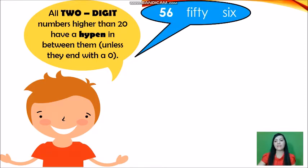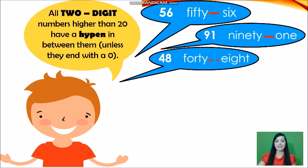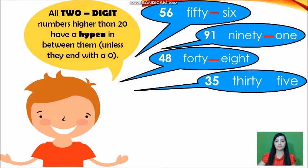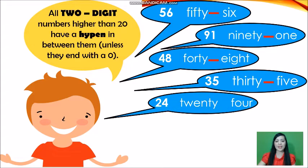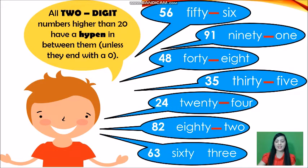Example: 56 — put a dash or hyphen in between 50 and 6. Number 1: 91, 48, 35, 24, 82, and 63. Don't forget, put a dash or a hyphen in between 60 and 3.